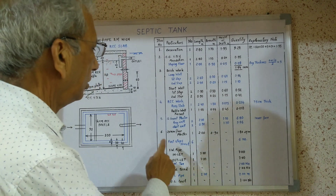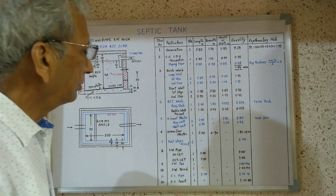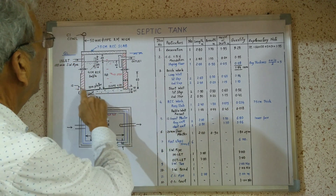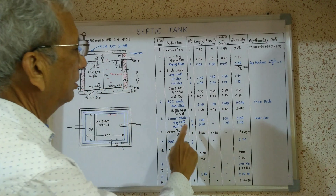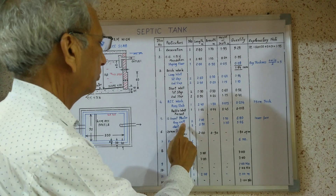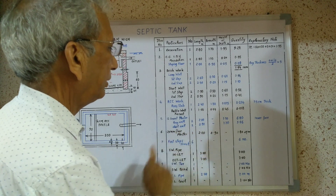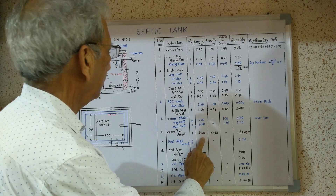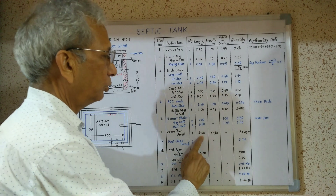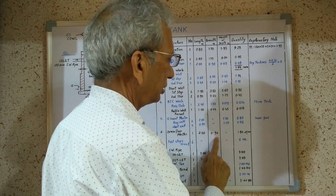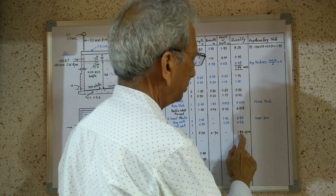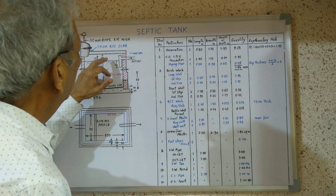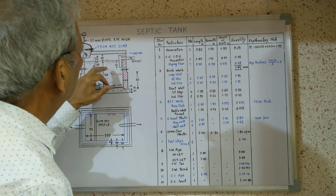Next item is 20 mm thick floor plaster. One number item — length of floor plaster will be internal size 2 meters by 90 centimeters, giving 1.80 square meters. We have also fitted iron steps so that a person can go down into the septic tank.